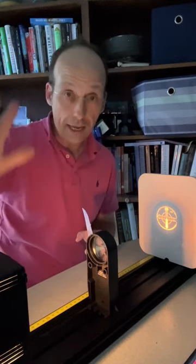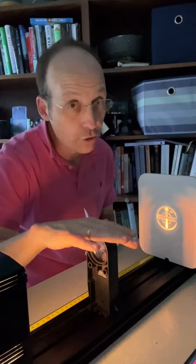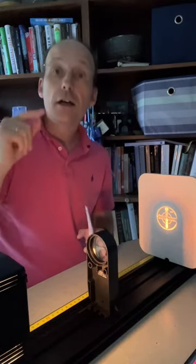Okay, so here's the answer. I have a light source with an image, a converging lens, and I form a real image on this screen right here. If I cover up the whole lens, the whole thing goes away.